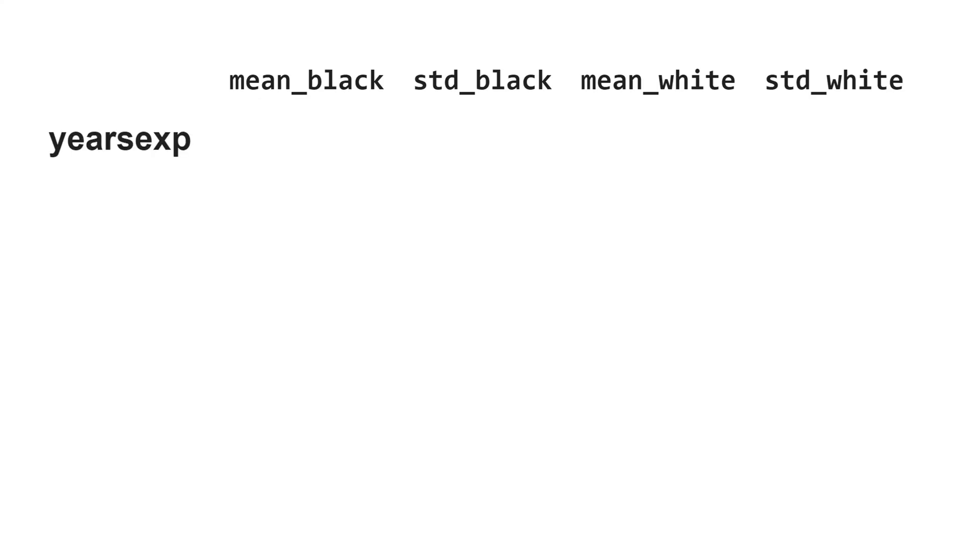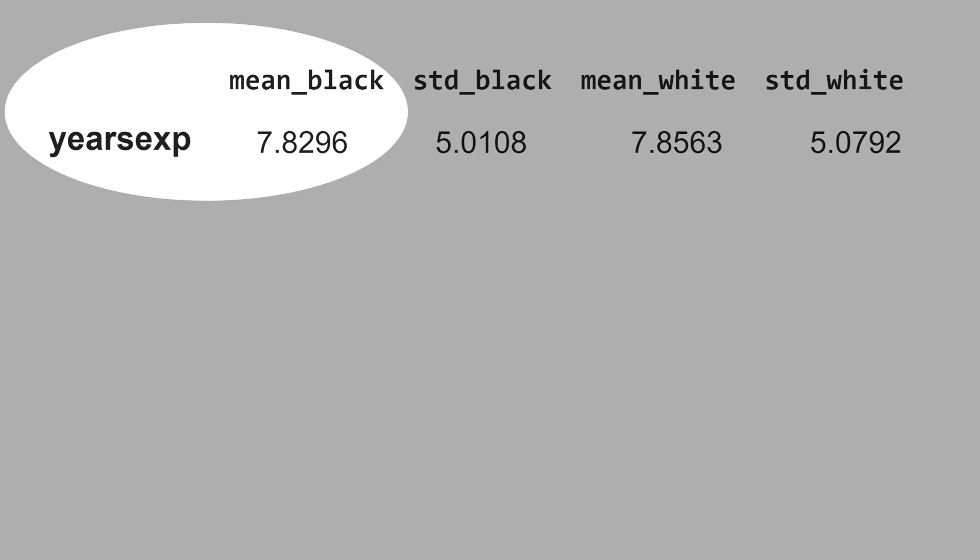Now, let's see the descriptive statistics. The average years of experience for black people is 7.82, and for white people is 7.85. They are very similar numbers.